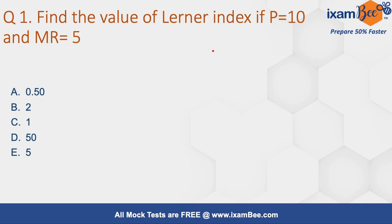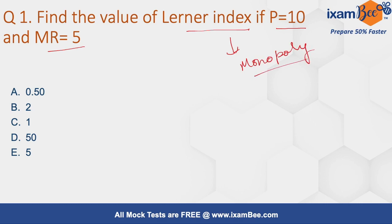Question number 1: Find the value of Lerner's Index if P equals 10 and MR equals 5. Lerner's Index measures the degree of a firm's monopoly power, and its value ranges from 0 to 1.